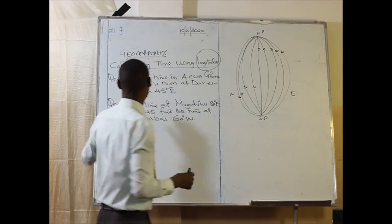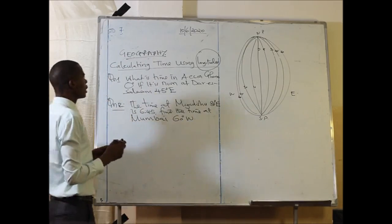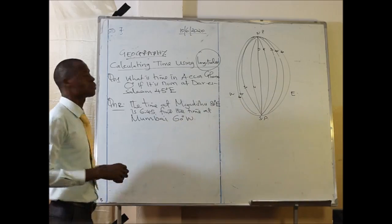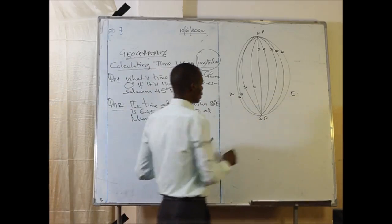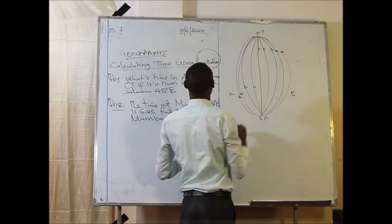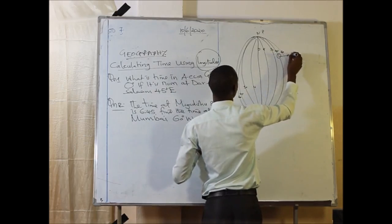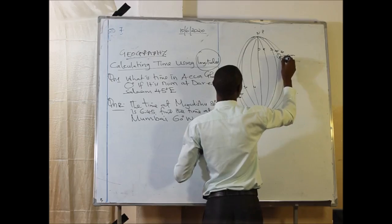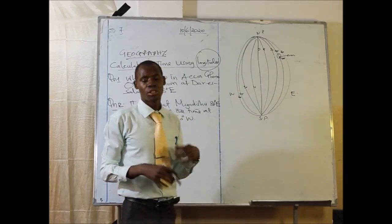Let us come back to question number one. What is the time in Accra, Ghana, which is zero degrees, if it is noon in Dar es Salaam at 45 degrees? So to find the time, let's say this is Accra, Ghana, and this is Dar es Salaam. In Dar es Salaam it is noon. We don't know the time in Accra, Ghana.